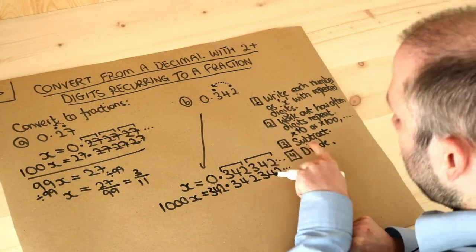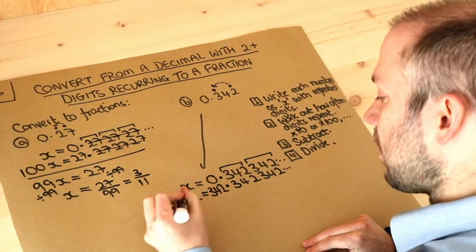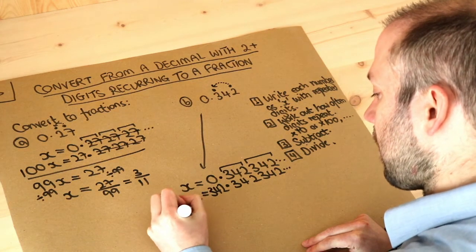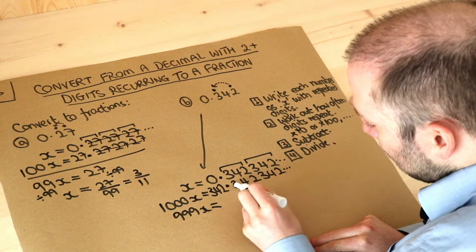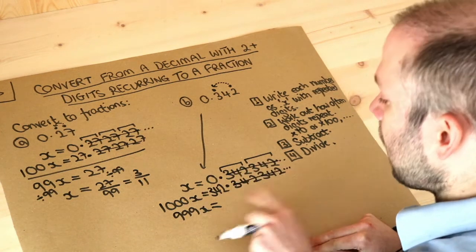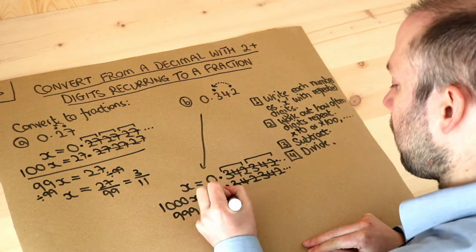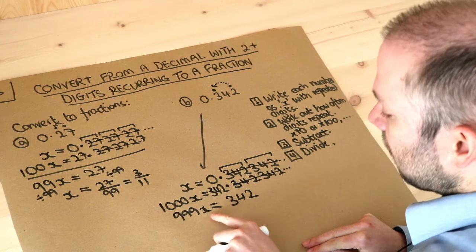And then step three is just subtract these equations. So a thousand x minus x is 999x, and then this minus this, well these are all the same, these digits, so these will just cancel when you subtract them, and we're just left with 342 minus 0 is 342.